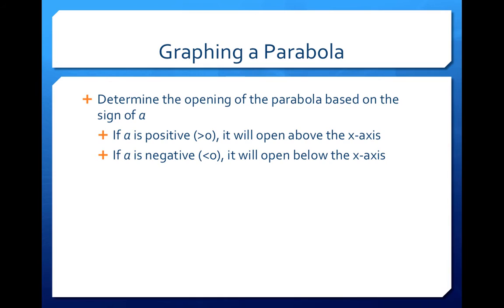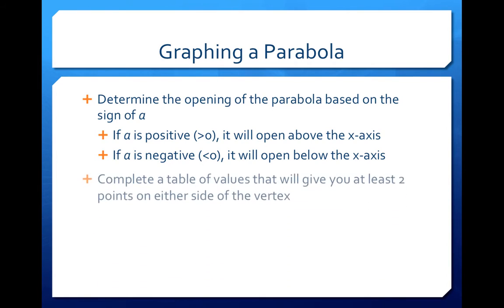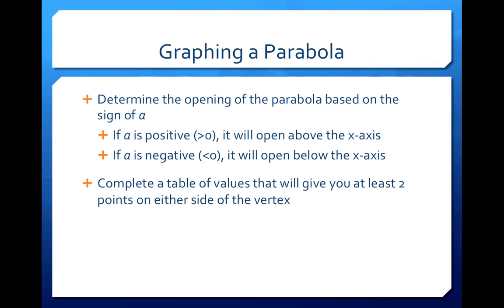What happens if you're just given the rule, and they want you to graph it? Well, look at the rule. Look at a. If a is positive, you'll know that your parabola will be above the x-axis. If your a is negative, you should know that it is going to open below the x-axis. The second thing I would do is complete a table of values.